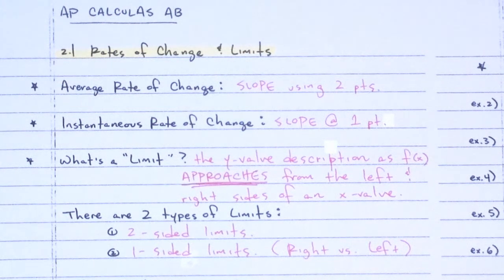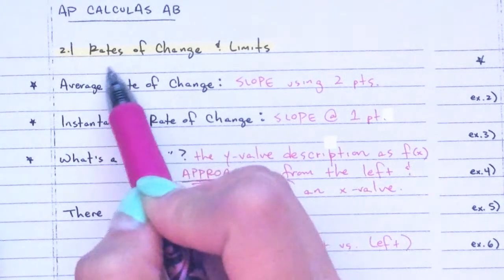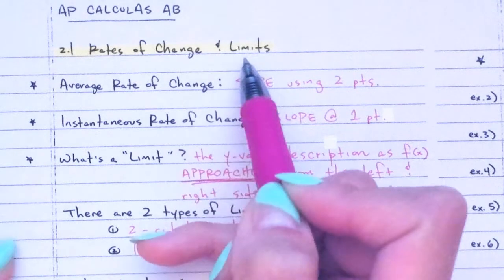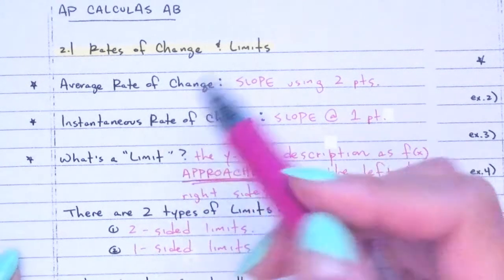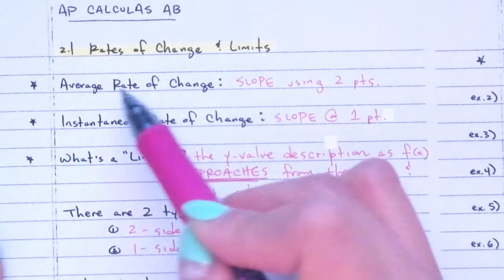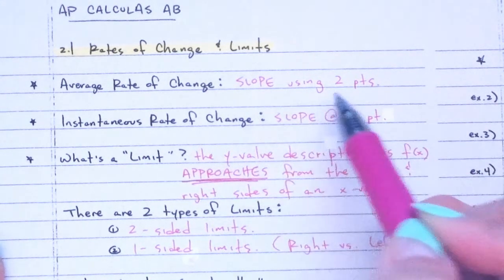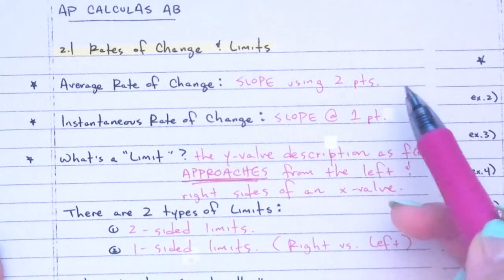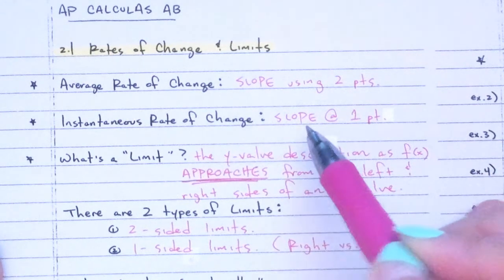First lesson of Calculus 2.1 — we're starting with chapter 2. Section 2.1 covers rates of change briefly, then limits, which is our real focus. An average rate of change is slope — you learned that in algebra 1. It's slope using two points: (y minus y) over (x minus x).